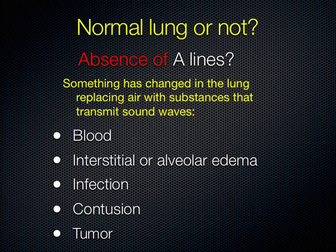When wondering whether you have normal lung, you're asking: are the A lines gone? If the A lines are gone, that means there's not air there — something else has replaced the air in the lung. That could be blood, edema, infection, contusion, or tumor. Any number of things can obliterate the A lines, and then you have to start thinking about what has taken their place.